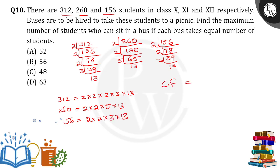So now we have to find the common factors. What are the common factors? 2 is a common factor. 2 is a common factor. And 13 is a common factor. So 2, 2, 13. Therefore, HCF is equal to 2 into 2 into 13. We will get 52.